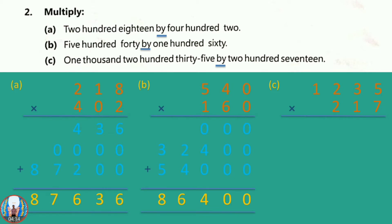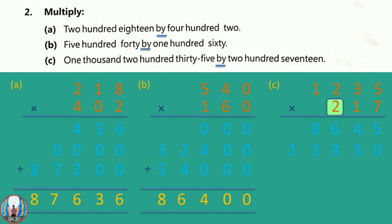Question number C: 1235 into 218. We multiply 1235 into 8, then 1235 into 1, then 1235 into 2. We add all the numbers and the answer is 2,67,995.